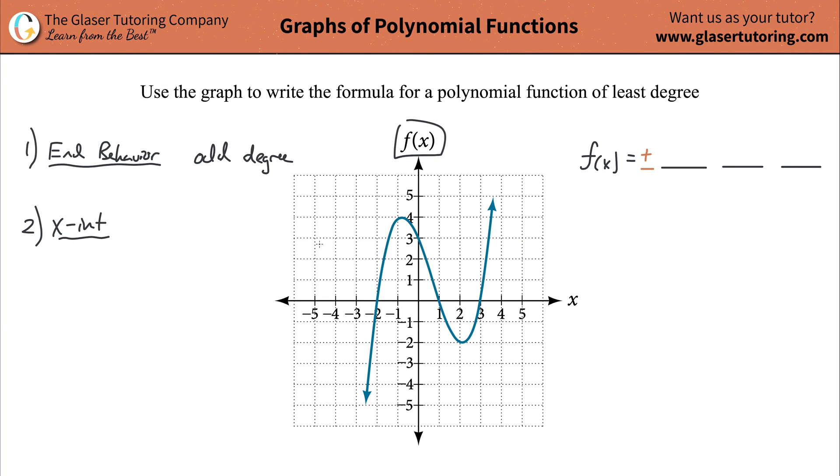The next thing then is going to be to identify the x-intercepts. Now the x-intercepts, this is very simple. You go to your graph and you're going to locate the places where the function crosses that x-axis. So we've got three particular positions where it crosses the x-axis. And the x value here is going to be negative two, so I have an x-intercept at x equals negative two. I also have an x-intercept when x equals one and an x-intercept when x equals three.